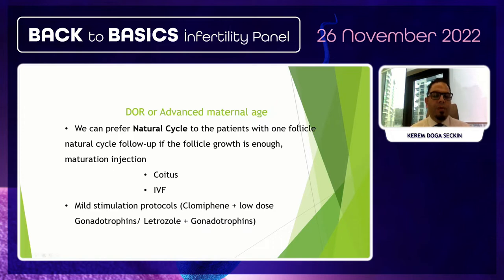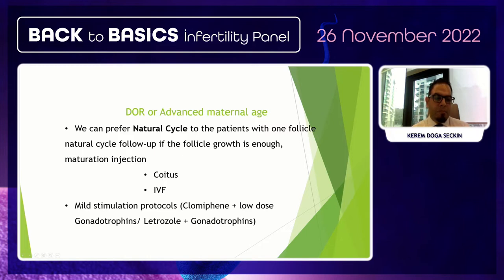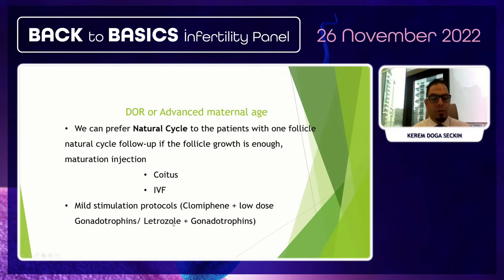Mini stimulation protocols using clomiphene and low-dose gonadotropins or letrozole plus gonadotropins can be used. In recent years, mini stimulation protocols have become increasingly common. For standard IVF, there is the long agonist protocol — daily agonist injections starting on day 21, then ovarian stimulation beginning on day 2 or 3 of menstruation.